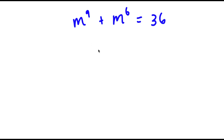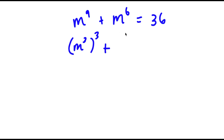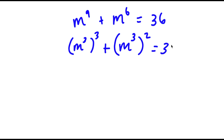In this problem I have m to the power of 9 plus m to the power of 6 is equal to 36. We rewrite m to the power of 9 as m to the power of 3, to the power of 3, and m to the power of 6 as m to the power of 3, to the power of 2, and this is equal to 36.